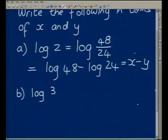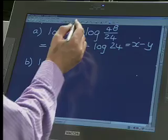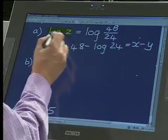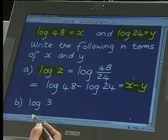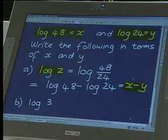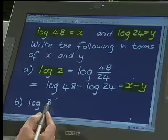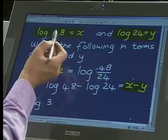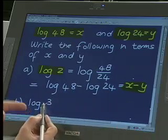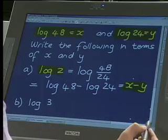Now we go to log 3. When answering questions with parts A, B, and C, remember that you've already worked out log 2. So we now have three pieces of information: log 48 is X, log 24 is Y, and log 2 is X minus Y. When writing the number 3 in a different form, we look at expressing it using 48, 24, and 2.